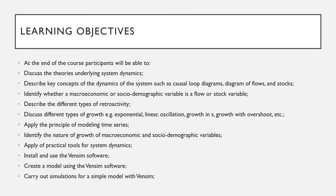At the end of this course, participants will be able to discuss the theories underlying system dynamics. They will also be able to describe key concepts of the dynamics of the system, such as causal loop diagrams and diagrams of flows and stocks. They will also be able to identify whether a macroeconomic or socio-demographic variable is a flow or a stock variable.